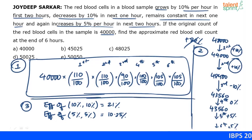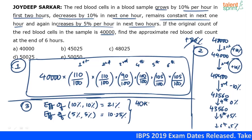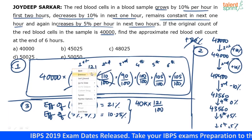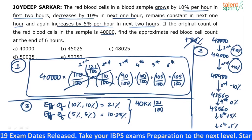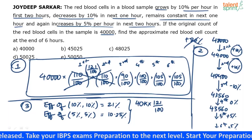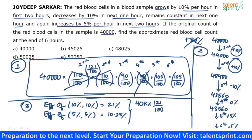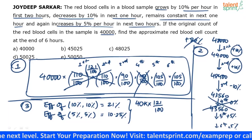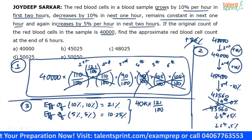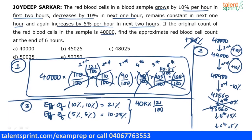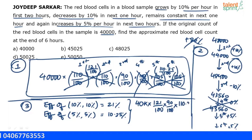In Method 3, the final count is 40,000 × (121/100) × (90/100) × (110.25/100). The 100/100 for the fourth hour is dropped since it makes no change. So instead of six steps, we do only three: increase by 21%, decrease by 10%, then increase by 10.25% for the fifth and sixth hours together.